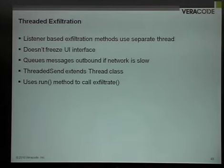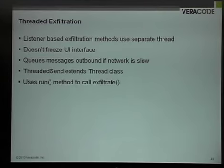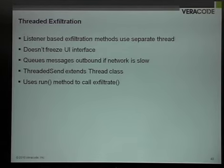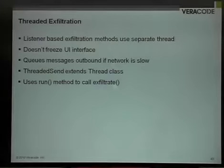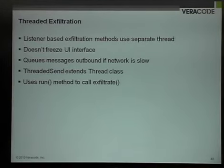All of the listeners use threaded-based exfiltration so I spawn a thread for those. Whenever a listener exfiltration is attempted we spawn a new thread so the operating system and event queues don't bog down waiting for responses. That 600 SMS message mistake told me I had to thread those listeners because it just bogged the crap out of my BlackBerry during debugging, but it also allows us to queue the messages outbound if the network is slow. To do the threaded exfiltration, I extended the thread class and created a custom threaded send class, then used the run method within that class to call the exfiltration function which actually sends the data outbound — so I just wrapped it in a thread essentially.